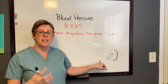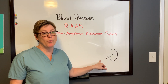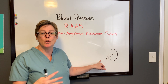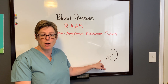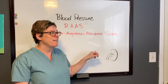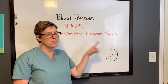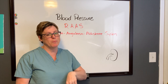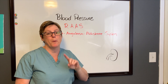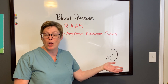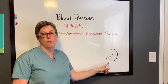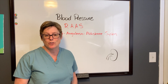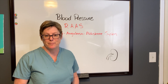The kidneys also require a certain amount of fluid or pressure in order to do their job. This information about the heart and the kidneys will become important when we talk about beta-1 blockers. But for now we're going to talk about the renin-angiotensin-aldosterone system.